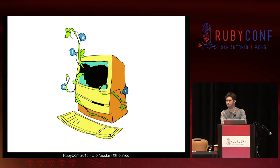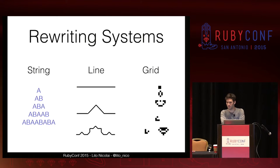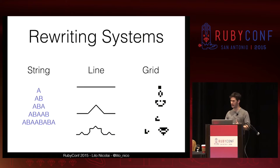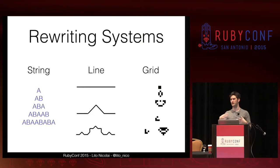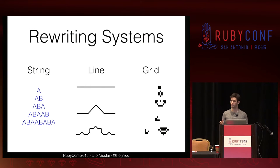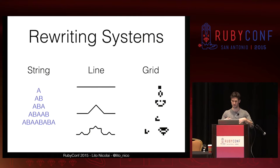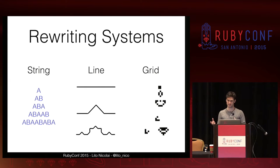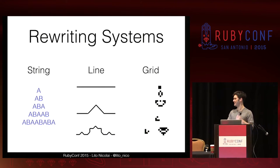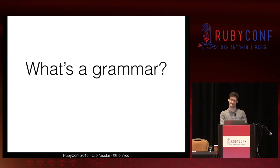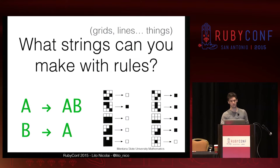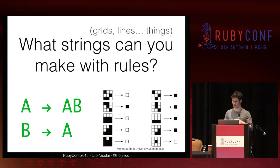Let's talk about computers for a minute. You might recognize this as something we come across in our day-to-day computer science lives as a rewriting system. We know these from the Game of Life, which rewrites a grid — each cell gets rewritten based on the structures around it — or the famous Koch snowflake fractal, where each line gets rewritten with a line segment with a triangle. This is a string rewriting system, and this is pretty solidly a grammar. But what is a grammar? A grammar is what strings, or grids, or lines — in any dimension — you can make with rules.